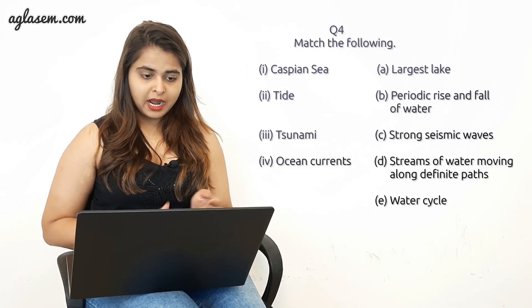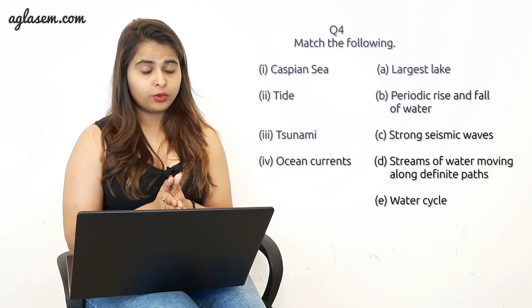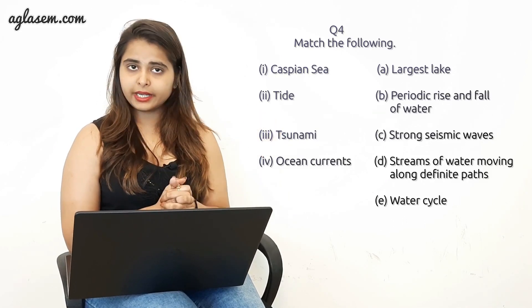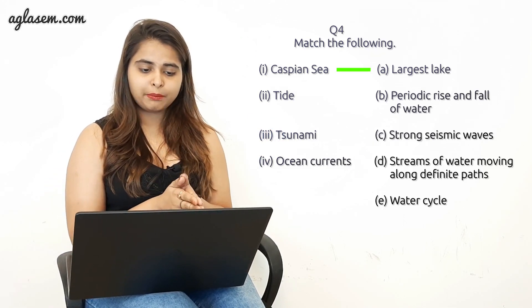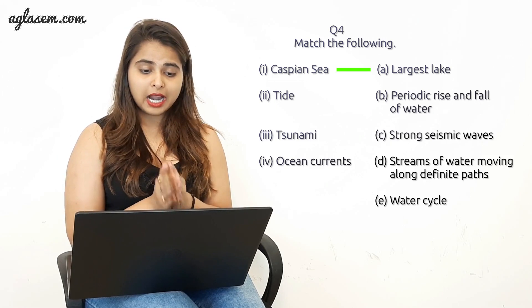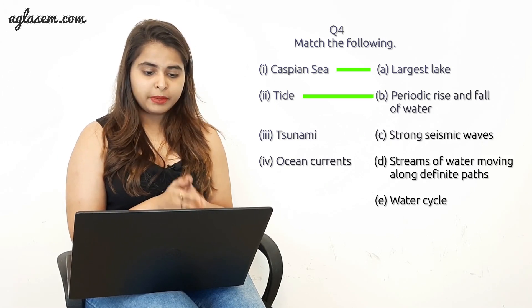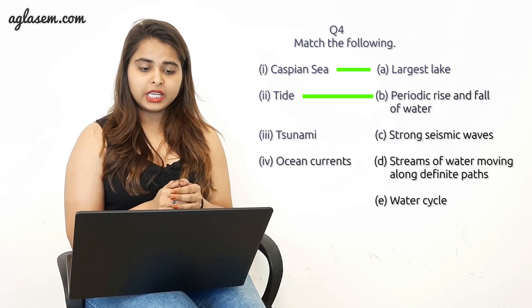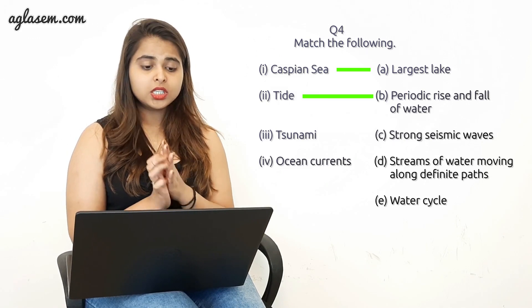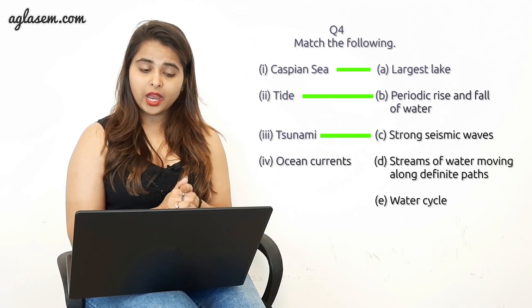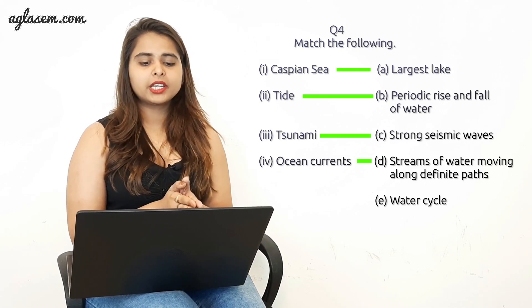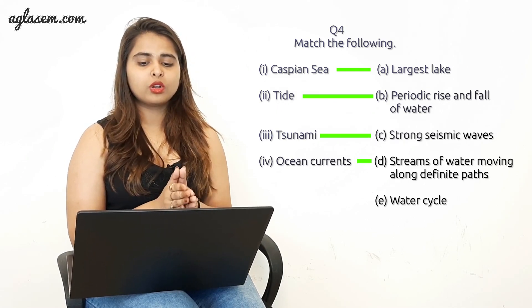Now the fourth part is match the following. You can see the rest of the question here. The answer is: Caspian Sea will be connected to A, largest lake. Tide will be connected to B, periodic rise and fall of the water. Tsunami will be connected to C, strong seismic wave. Ocean currents will be connected to D, stream of water moving along definite path.